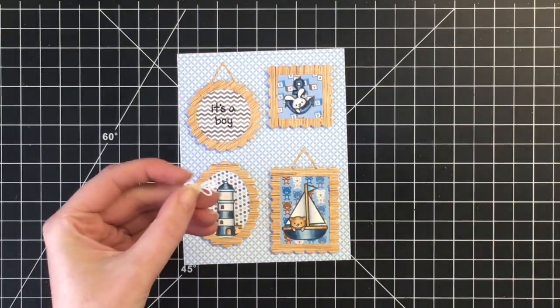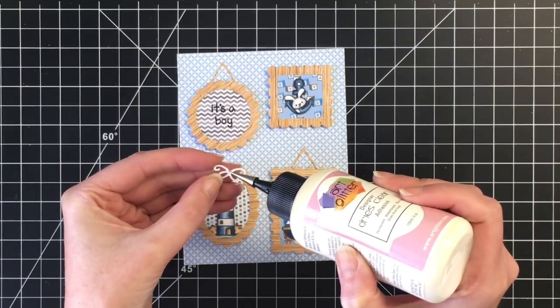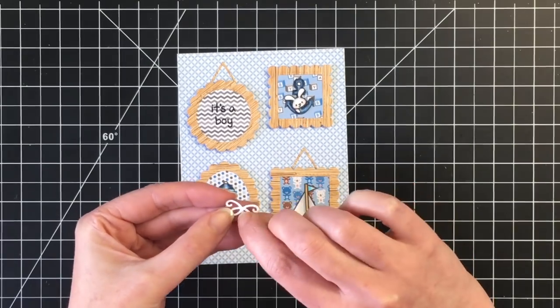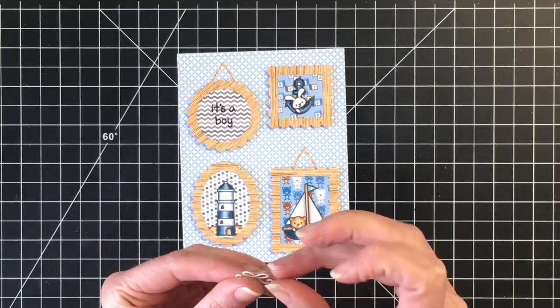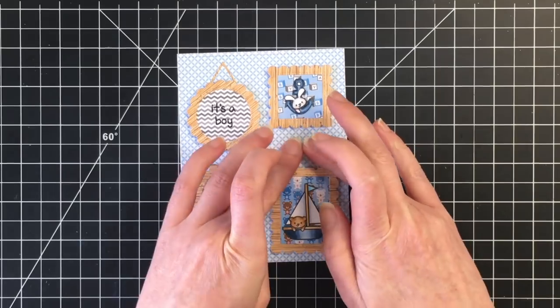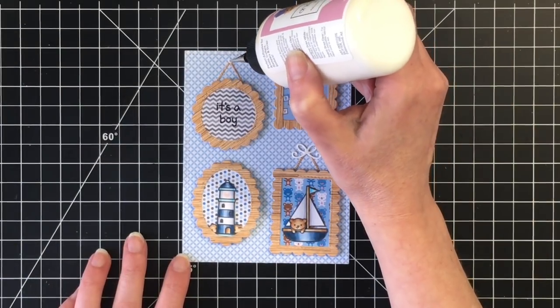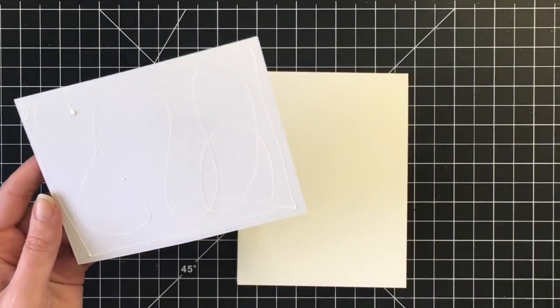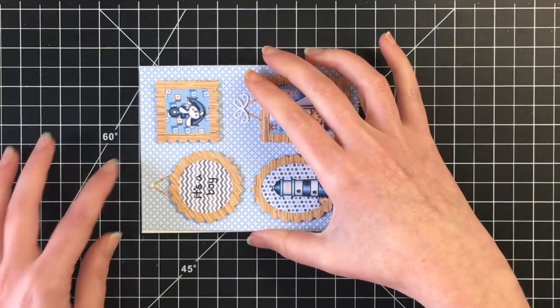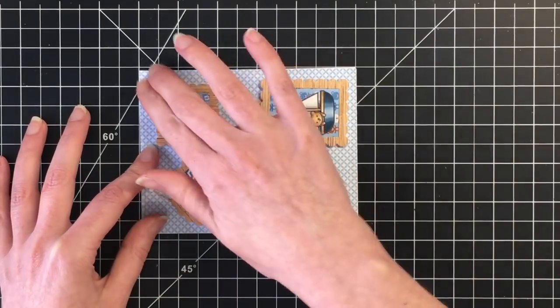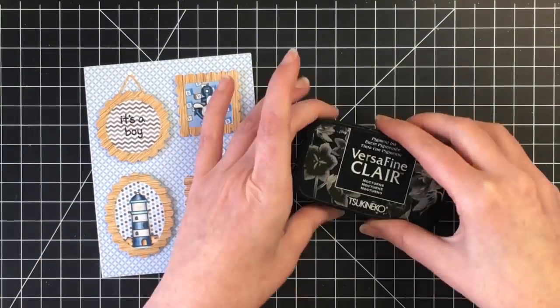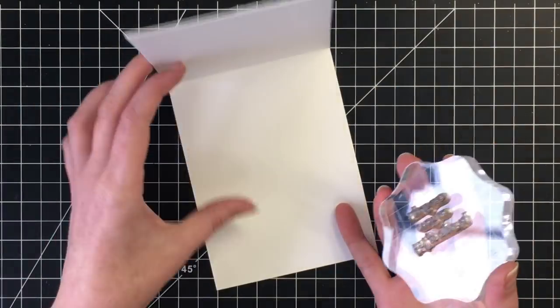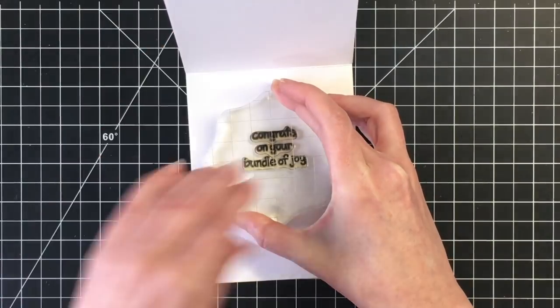I did cut these out of white cardstock. They don't show up that well on video but you can see them when you are looking at the card in person. Once I have that done I'm going to stamp the sentiment on the inside of my card. Again I'm using the Plus One stamp set for that and I'm just using the sentiment Congratulations on Your Bundle of Joy. So that finishes off the inside of the card.